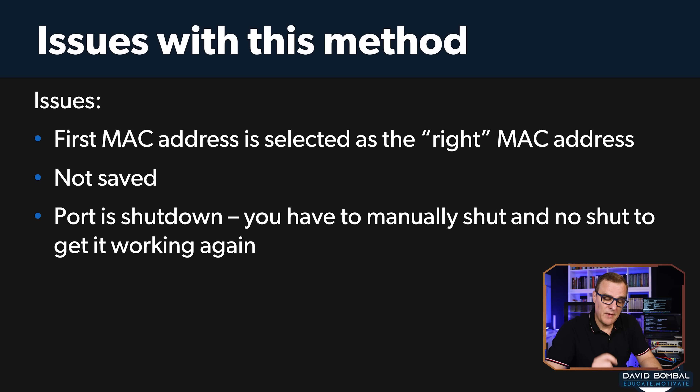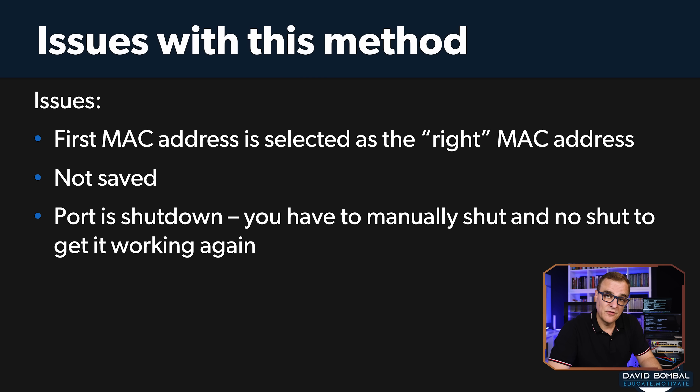Another problem here is that the first MAC address that's learned is determined to be the correct MAC address. So the first device that connects to the network is the device that's allowed — you're not explicitly configuring which MAC address is the right one. It's simply the first MAC address that sends traffic; as soon as another device sends traffic, the port is shut down. Also, this configuration is not saved, so if the port goes down and a different device connects first, that device's MAC address becomes the allowed one. You may want to manually configure a MAC address, or use sticky, so the switch remembers which MAC address is permitted even after a reboot.